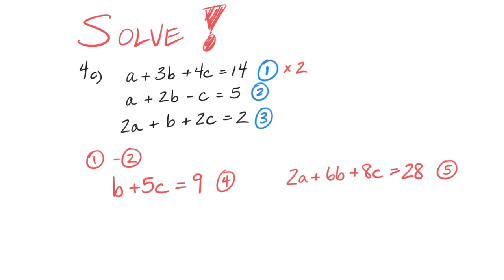Because I like positive coefficients, if I was to subtract 3 minus 5, I'm going to create a negative number of B's, and I don't like that. So what I'm going to do now is I'm going to take equation 5 and I'm going to subtract equation 3. And if I subtract in that order, my A's cancel out. I would now have a positive 5b plus a 6c, and that is going to equal 26. And that now becomes equation 6.